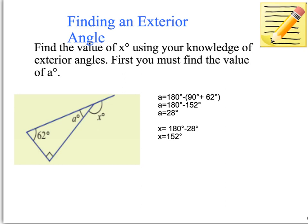Now you're going to use that knowledge of exterior angles to find the value of X. This is a bit trickier — you actually have to find the value of A first. To work out A, we know that all the angles in a triangle equal 180 degrees. We can see that one angle is 90 degrees because it has the right angle symbol, and then we've got 62 degrees. So 180 minus 90 plus 62 equals 180 minus 152, which equals 28. So A equals 28 degrees. Now, since A and X are supplementary and add to 180 degrees, we take 28 away from 180, and we're left with 152. That is the value of X.